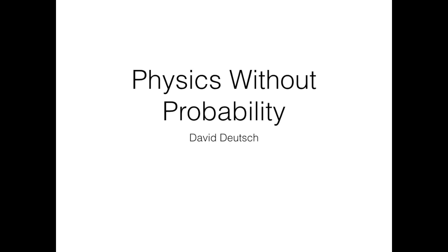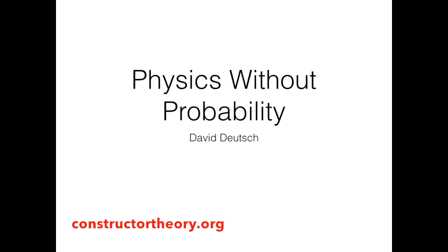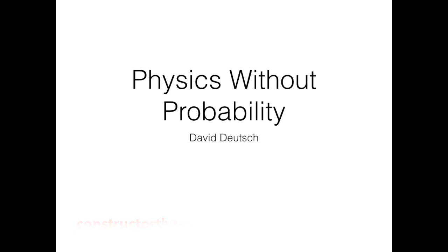Thank you very much, David. Just before we take questions, let me mention that there's a website — constructortheory.org — where you'll find many of the things that David alluded to, papers and so forth. Q&A: 'With your slot machine, I'm walking out with no modified understanding. If someone asked me what the funny numbers — the square roots — in front of the eigenstates mean, I would say: if I pull the handle lots and lots of times, in the limit, one third of the time you get this result and two thirds of the time you get this other result. Which result will you get next? I would say I don't know. I didn't understand how to modify my way of thinking about that based on what you talked about.'